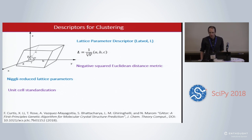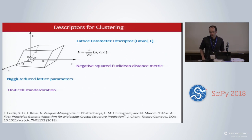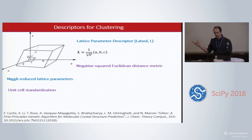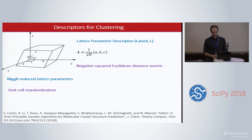Affinity propagation does require a descriptor and a distance metric, which is true of many machine learning applications. I'm going to describe a few that we used. One is a lattice parameter descriptor based essentially on the unit cell. You have the lattice parameters A, B, C, and they form a feature vector when you divide by the cube root of the volume. The lattice is Niggli-reduced and standardized because there are many representations of the same structure.